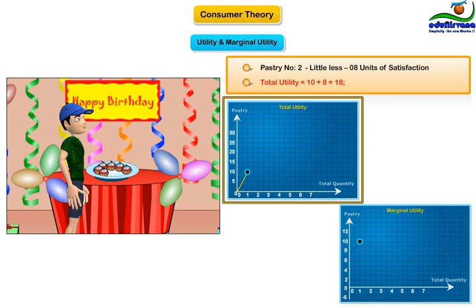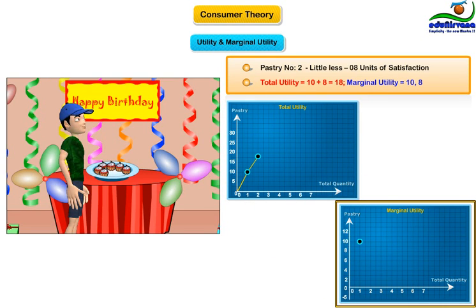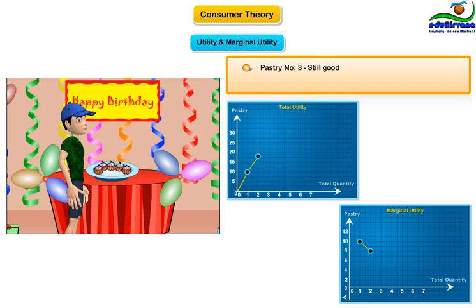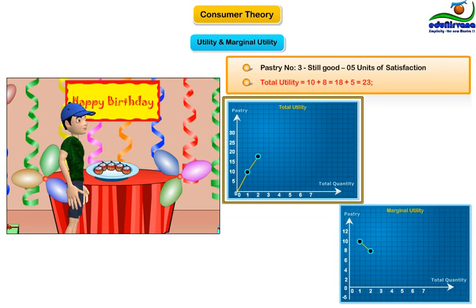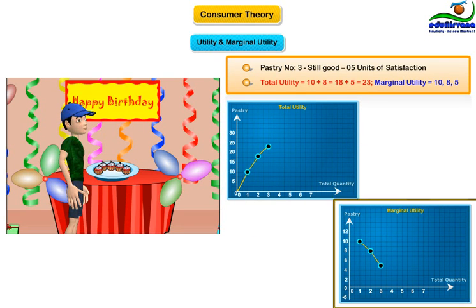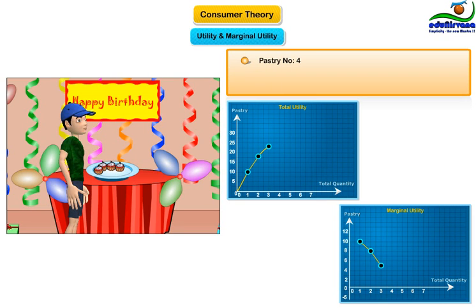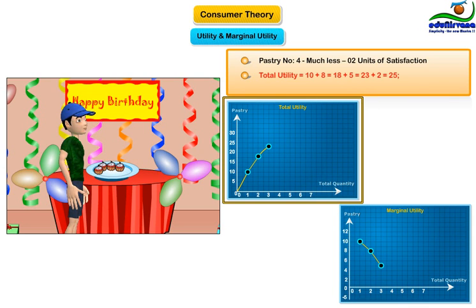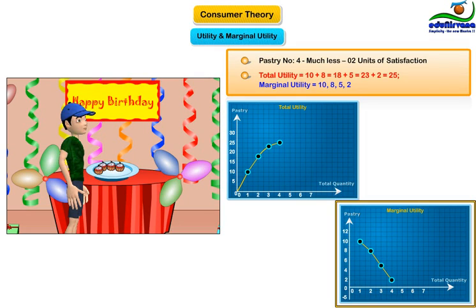The second pastry added a little less — say 8 units — to your overall sense of well-being. So the total utility increased to 18 (10 plus 8), but the marginal utility decreased from 10 to 8. Pastry number three still good, but you started to fill up, so it adds only 5 units. Total utility is now 23 (18 plus 5), marginal utility decreased to 5. Pastry number four: your stomach was now full and this pastry added much less — only 2 units. Total utility 25, marginal utility 2.